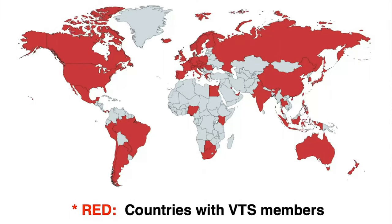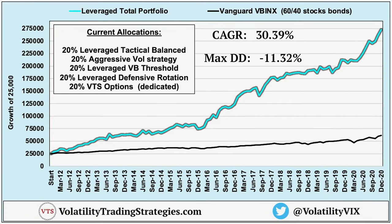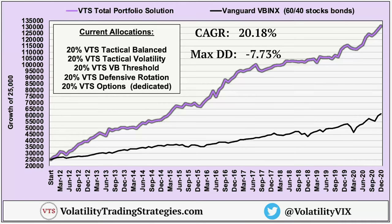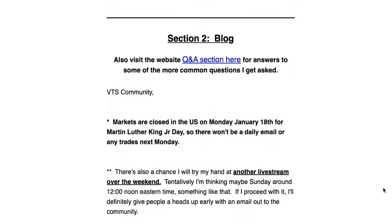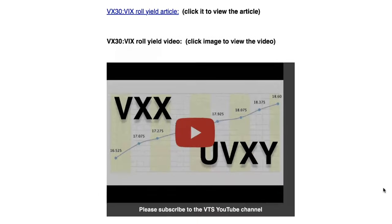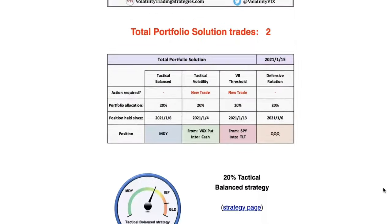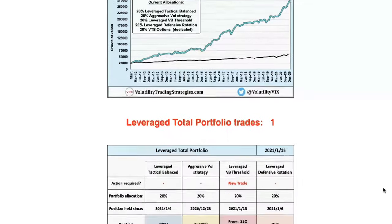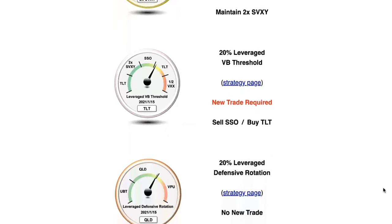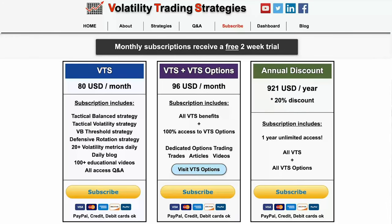If you feel like you need more structure in your investing, I manage a private investing community with members from over 65 countries. It's centered around diversified portfolios — you choose the one that best suits your personal risk tolerance. There's a daily email with volatility metrics, a daily article or video on requested topics, and I state exactly what position each strategy will be in, with allocation sizing and risk management. The VTS community has enjoyed consistent performance for over nine years. No obligation — go to volatilitytradinstrategies.com, click the subscribe tab; the monthly subscription comes with a free two-week trial.